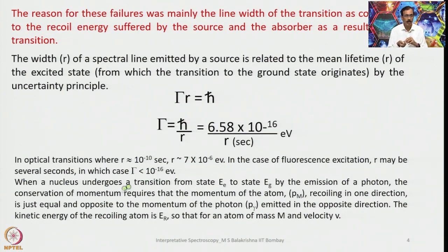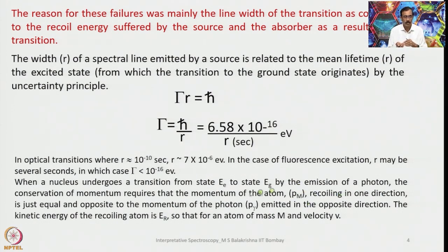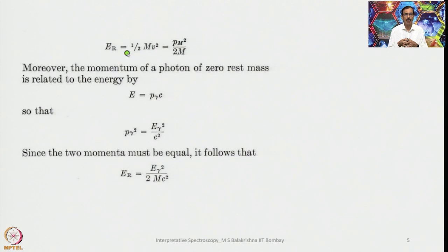In the case of fluorescence excitation, τ may be several seconds, in which case Γ is less than 10⁻¹⁶ electron volts. When a nucleus undergoes a transition from the excited state to the ground state by the emission of a photon, conservation of momentum requires that the momentum of the recoiling atom p_m is equal and opposite to the momentum of the photon p_γ. The kinetic energy of the recoiling atom is E_R, so that E_R = ½mv² = p_m²/2m. Moreover, since the momentum of a photon is E/c, squaring gives p_γ² = E²/c², and since the two momenta must be equal, it follows that E_R = E²/2mc².